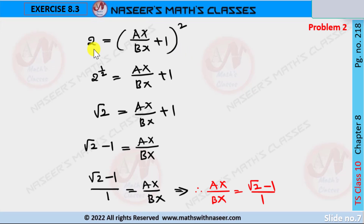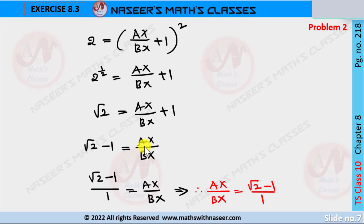So 2 by 1 is written as 2 in LHS, and RHS is written as AX by BX plus 1, whole squared. Now we transpose the square from RHS to LHS, and it becomes 2 to the power 1 by 2, which is also written as root 2. Then we can write root 2 is equal to AX by BX plus 1. We transpose 1 from RHS to LHS, giving root 2 minus 1 is equal to AX by BX. Therefore, AX by BX is equal to root 2 minus 1 by 1. This is the required ratio.